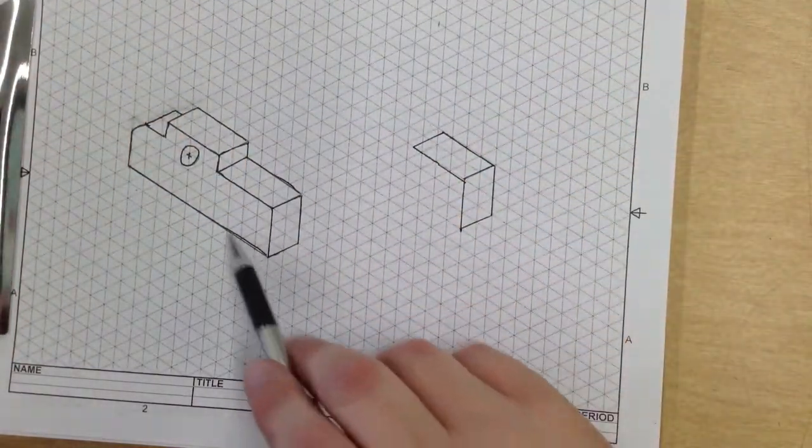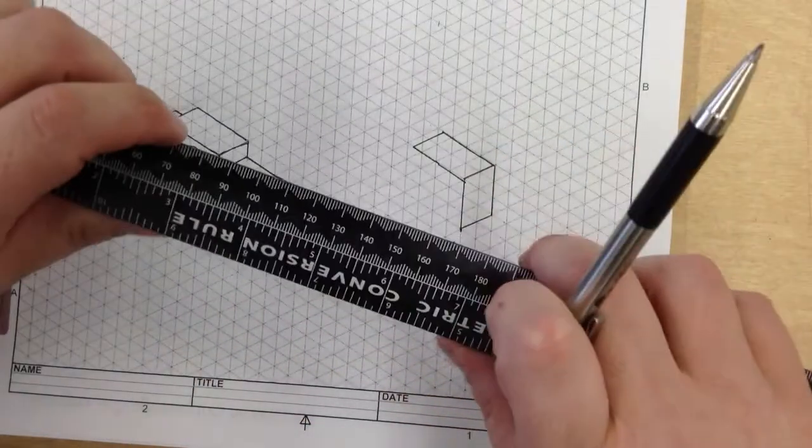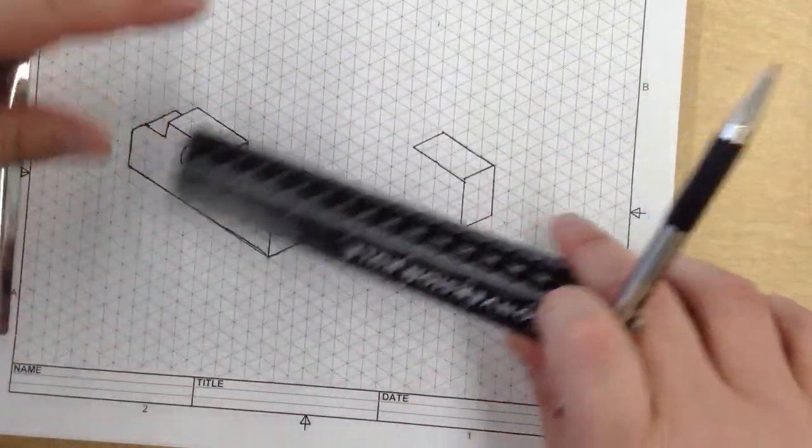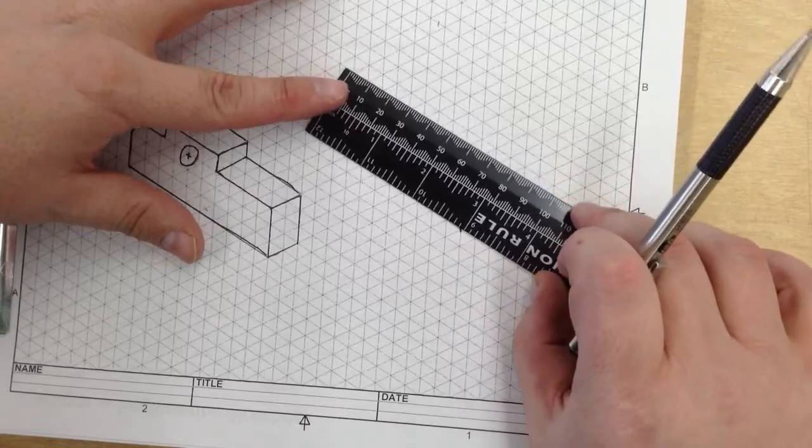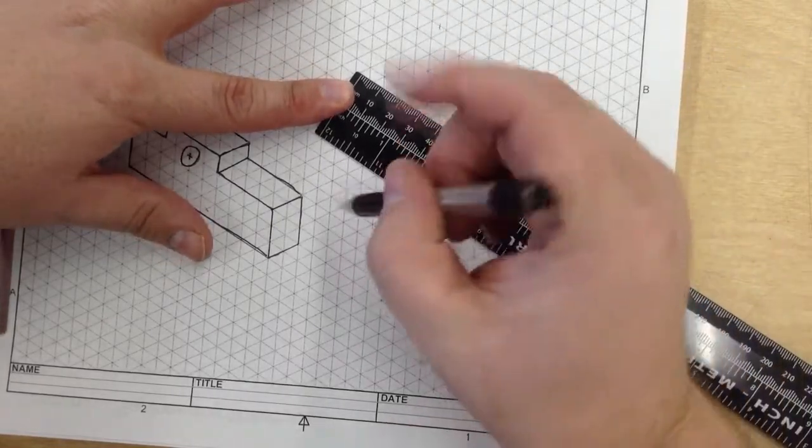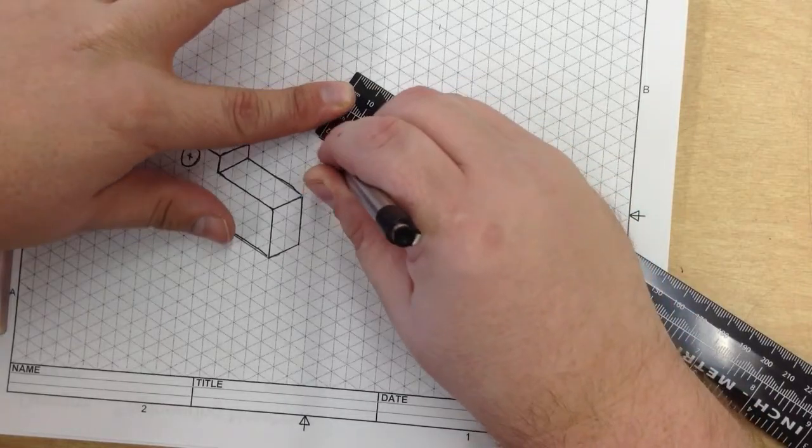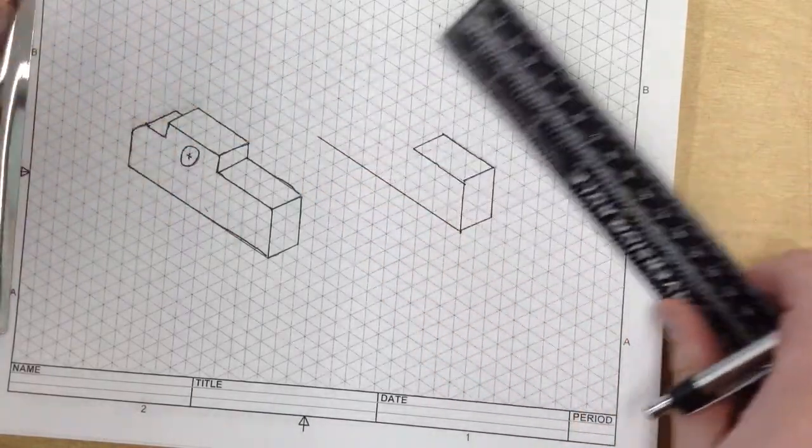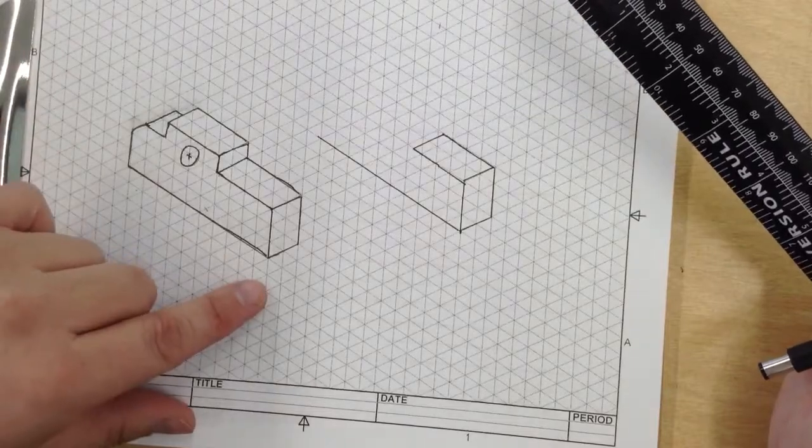Now it is two and three-fourths, or 2.75 inches that way. So I am going to take my ruler, line up 2.75, draw through to the end, and that gives us that section.